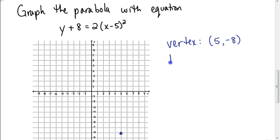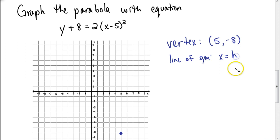Next, we're going to find the equation for that line of symmetry. The line of symmetry is going to be the equation x equals the h value of my vertex, which is 5. So my line of symmetry is x equals 5. When I graph this line of symmetry, I use a dashed line, because we're going to use that later if we need to reflect any points — but technically it is not something we would see as part of our parabola.